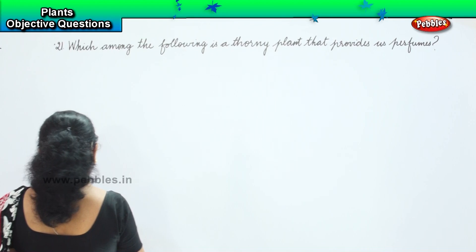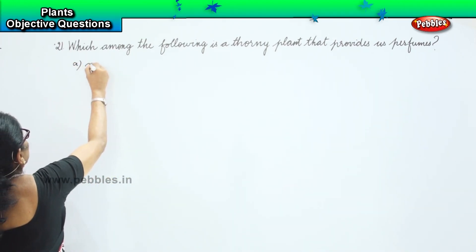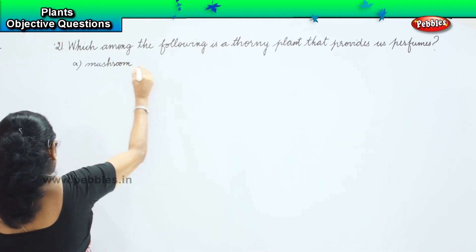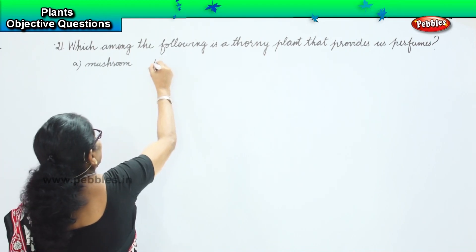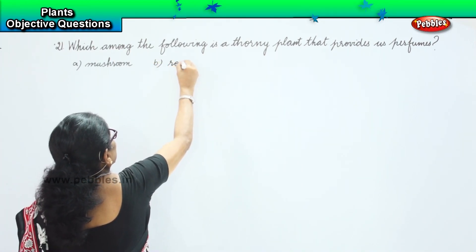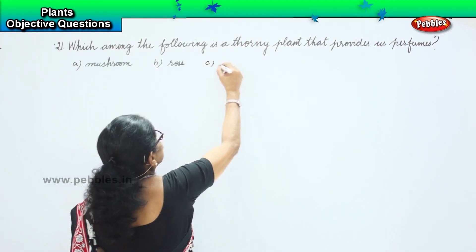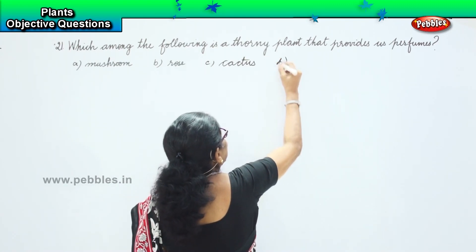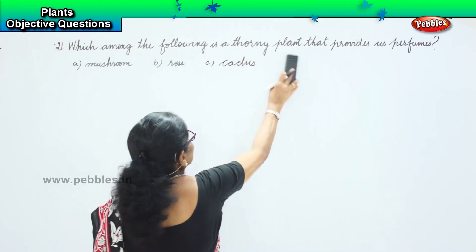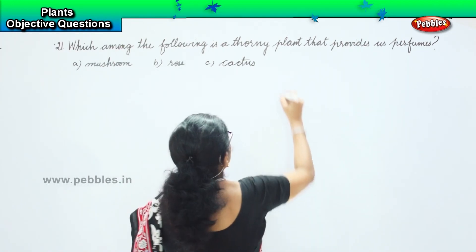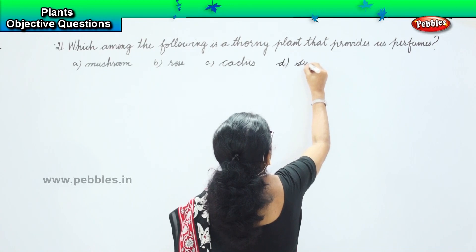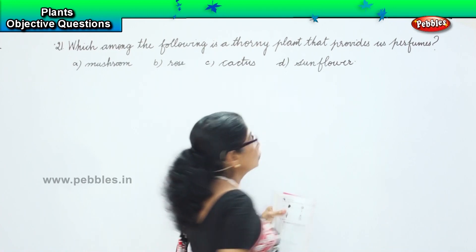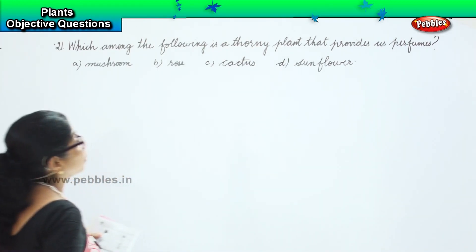Now your options are: A — Mushroom, B — Rose, C — Cactus, and option D — Sunflower. So which of these is a thorny plant and also provides us perfume?